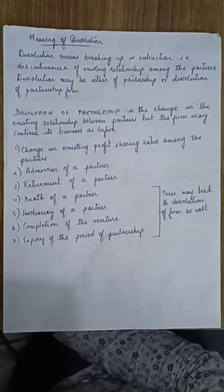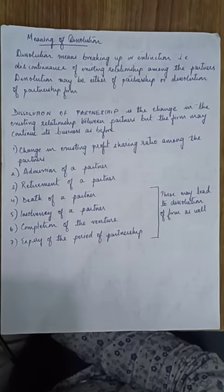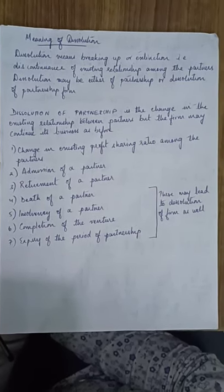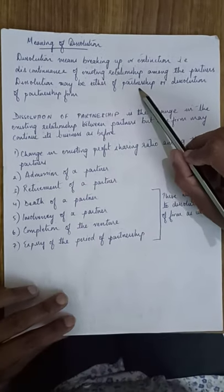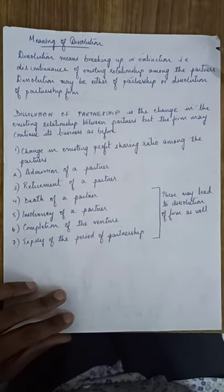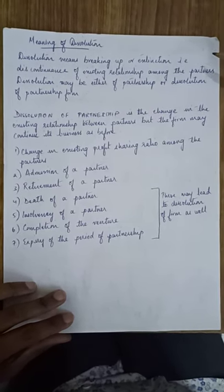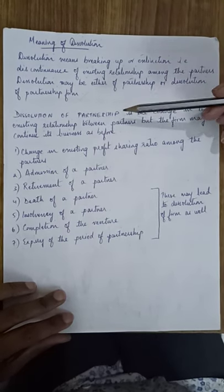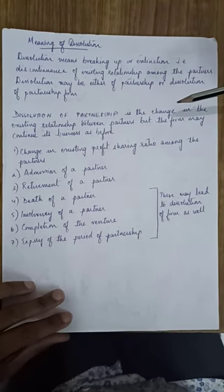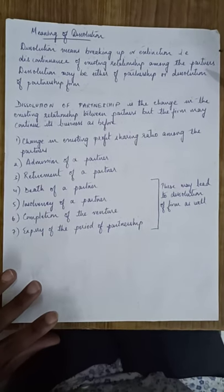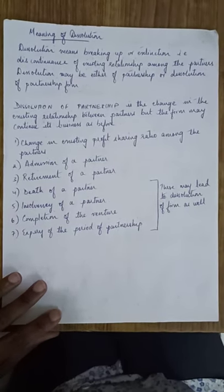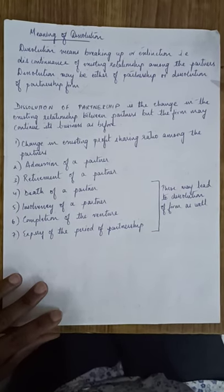What is dissolution? Dissolution means breaking up or extinction — that is discontinuance of existing relationship among the partners. Dissolution may be either of partnership or dissolution of the partnership firm. Dissolution of partnership, which we did in the earlier chapters, was the change in the existing relationship between partners, but the firm may continue its business as before.